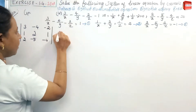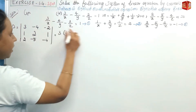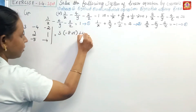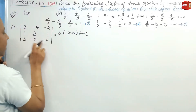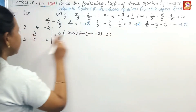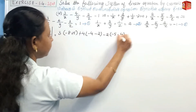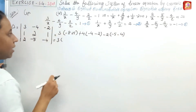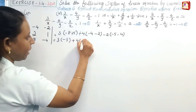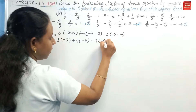Let's simplify the determinant. Expanding: 3 × (2×(−4) − (−5)×1) − (−4) × (1×(−4) − 2×1) + (−2) × (1×(−5) − 2×2). That gives: 3×(−8+5) + 4×(−4−2) − 2×(−5−4) = 3×(−3) + 4×(−6) − 2×(−9) = −9 − 24 + 18.